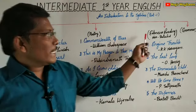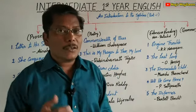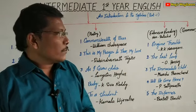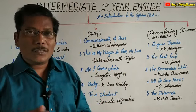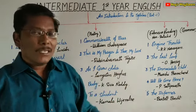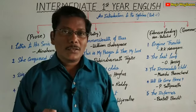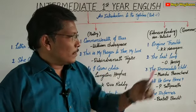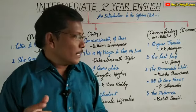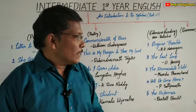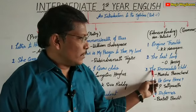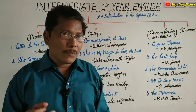Next, Extensive Reading — this can also be called Non-Detailed Extensive Reading. In the Extensive Reading section also, totally five stories are given. The first one is 'Engine Trouble', written by R.K. Narayan. The second one is 'The Last Leaf', written by O. Henry. And the third one is 'The Immaculate Child', written by Munshi Premchand.